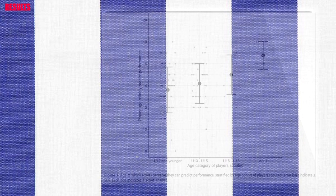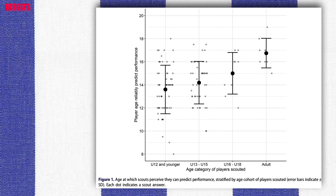The figure presents scouts' perceptions of predicting future performance — specifically, the age at which they can predict if a player has the potential to participate in professional soccer. The results show that the average age at which scouts perceived they could predict future performance increased depending on the age cohort they observed. Scouts observing U12 and younger players perceived they could reliably predict future performance at 13.6 years old; for U13–U15 scouts, this was 14.2 years old; for U16–U18 scouts, 15 years old; and for scouts observing adult players, 16.8 years old.